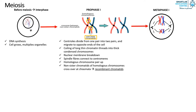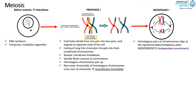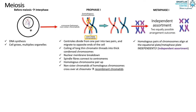The next stage of meiosis is metaphase 1. The homologous pairs of chromosomes align at the equatorial plate, or metaphase plate, independently. This process is called independent assortment, which means that the arrangement of the pairs of homologous chromosomes along the equatorial plate is independent of the other pairs.